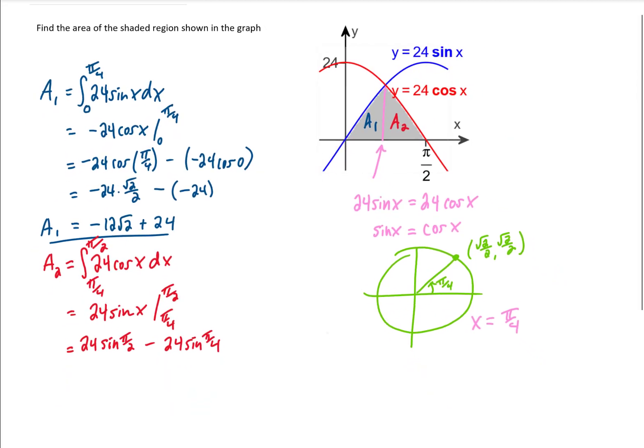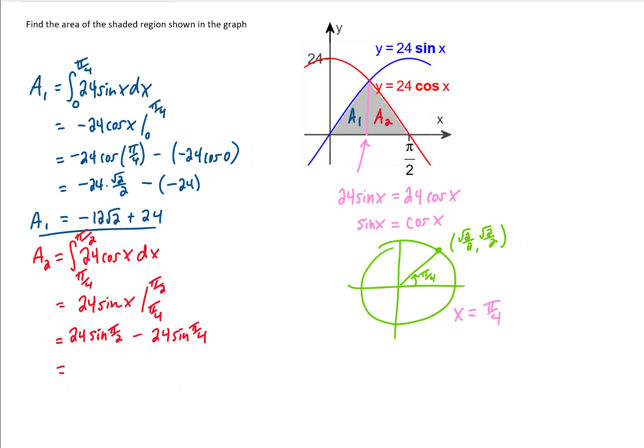I'll make a little bit of room so we can finish this problem off. We know that the sine of pi over 2 equals 1 and we know that the sine of pi over 4 is the square root of 2 over 2. That gives us that A2 is 24 minus 12 square root of 2. That's actually the same value for A2 that we found for A1. Which makes sense because it looks like this picture is symmetric.